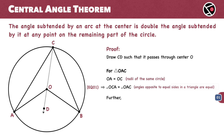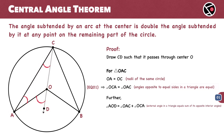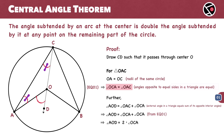Looking further into triangle OAC, angle AOD is an external angle. For any triangle, the external angle equals the sum of the two non-adjacent interior angles. So angle AOD equals angle OAC plus angle OCA. From equation 1, we know angle OCA equals angle OAC, so we replace angle OAC with angle OCA to get angle AOD equal to 2 times angle OCA. This is equation number 2.